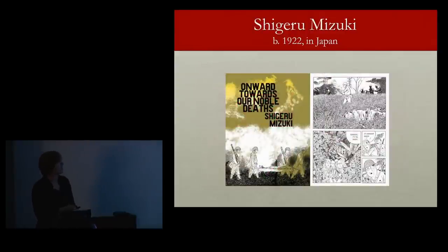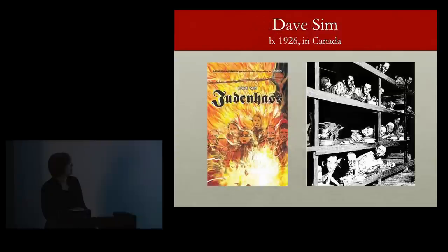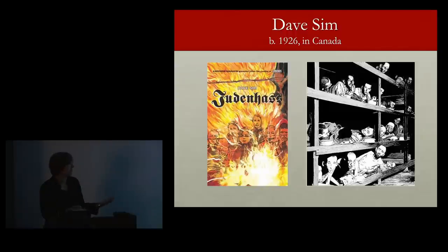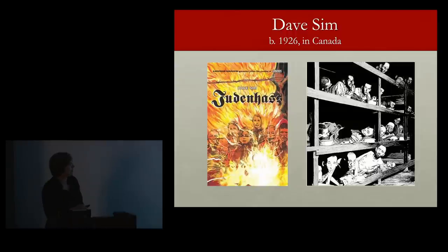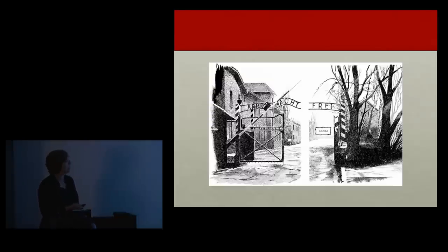You'll find graphic works from all different perspectives. A very famous work by a Japanese graphic artist, Onward Towards Our Noble Deaths, is about the experience of Japanese soldiers during World War II — it also won a lot of awards and prizes, a very powerful piece. Judith Haas is a work by Dave Sim, born in Canada, who is not a survivor but decided to try to depict the experience of survival during the Holocaust. He took very iconic photographs and recreated them through drawing. One technique you can use is to take a photograph and render it in a drawn version for a graphic piece.